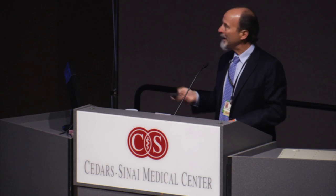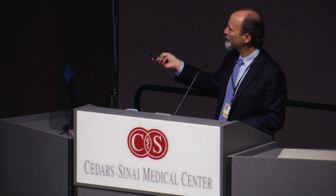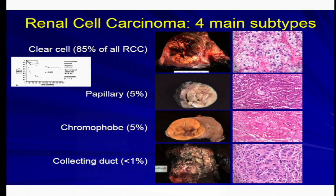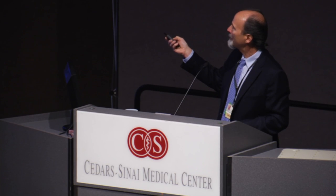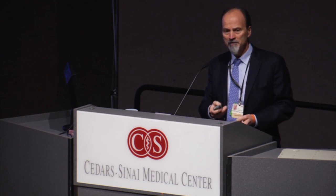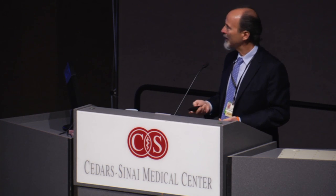These four subtypes are each unique based on their gross appearance. Look at the gross appearance — they're very unique. The clear cells of the clear cell type, the papillary architectural growth pattern of a papillary tumor, the unusual eosinophilic cytoplasm of the chromophobe. They have very characteristic gross and microscopic appearances, and also very unique biochemical, molecular, and genetic profiles.